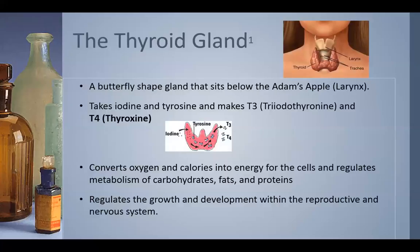Once these two hormones are made, they bind with thyroxine binding globulin and are then transported to each cell. These two hormones regulate metabolism throughout the cell. They're involved in oxygen and calorie uptake into the cell, regulate growth and development, and are very important in reproduction and the nervous system.